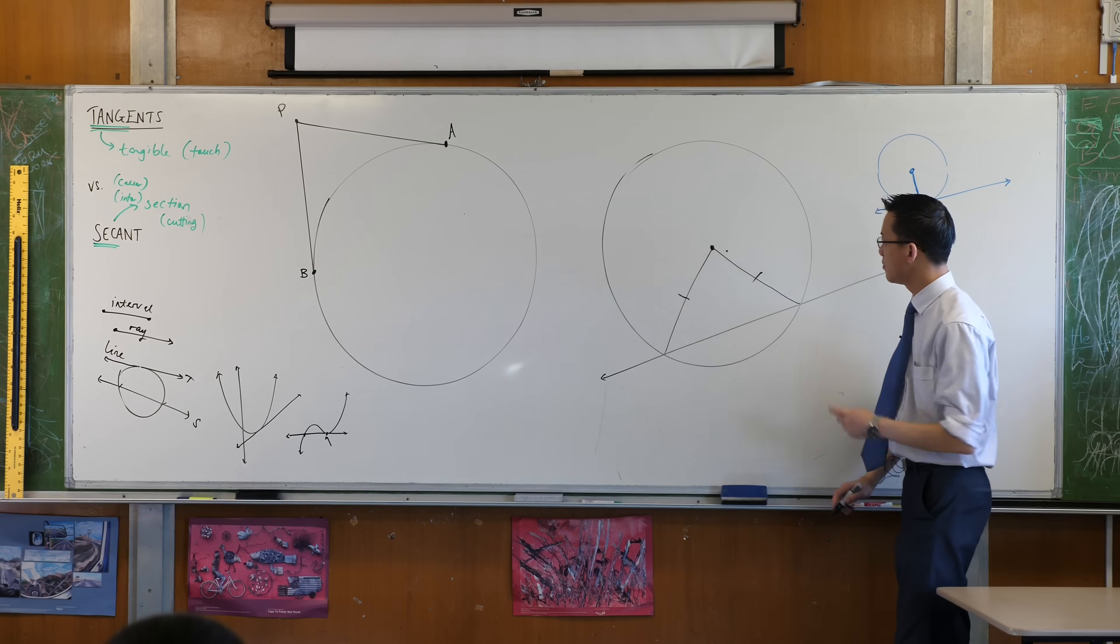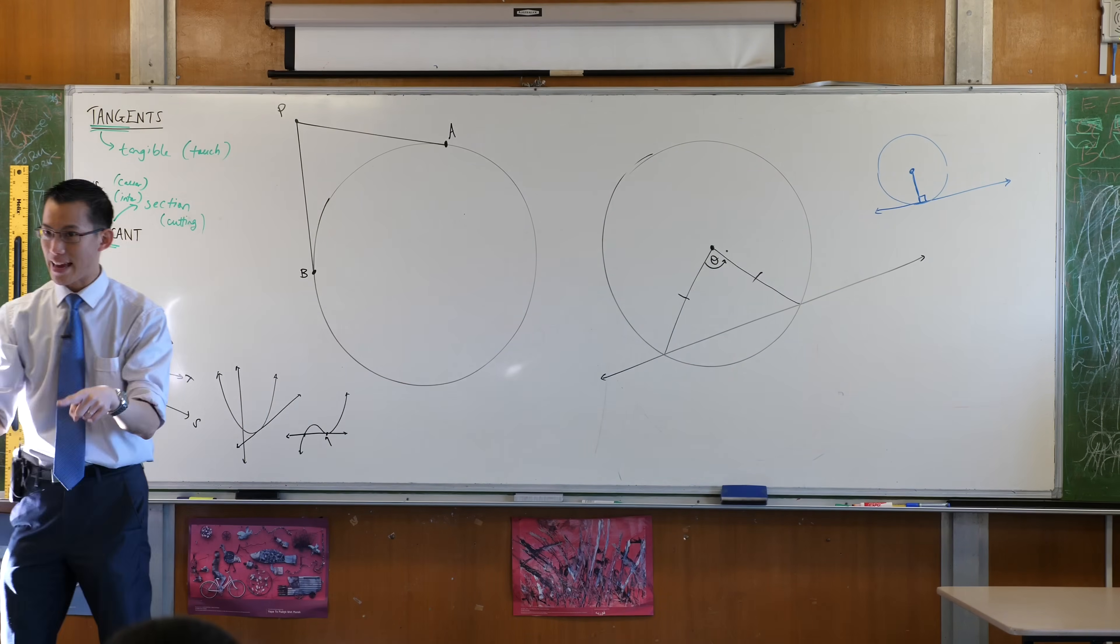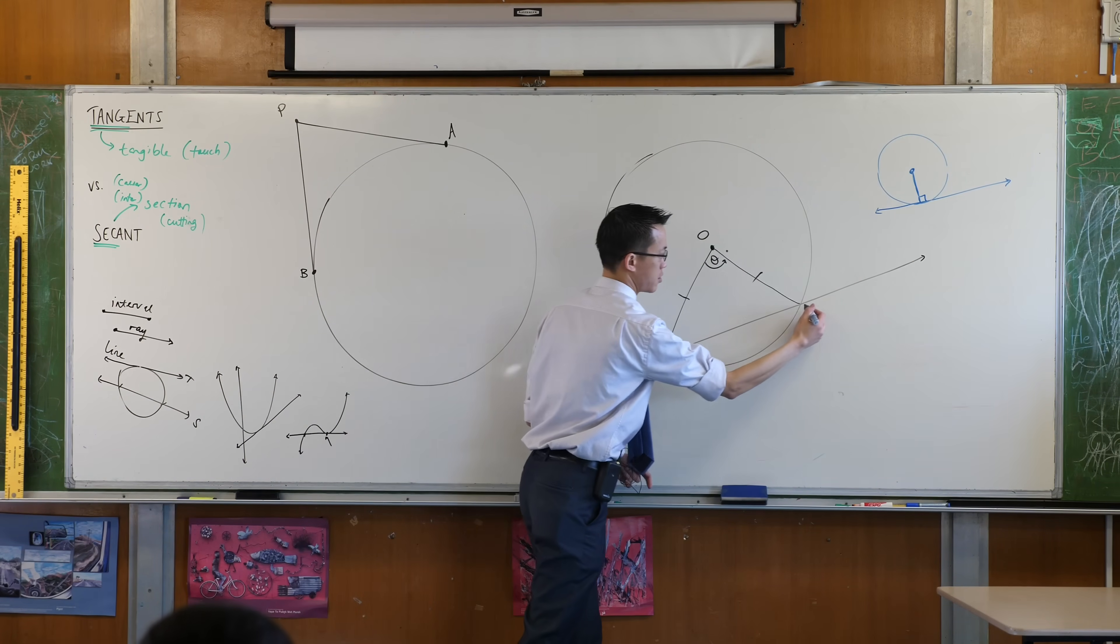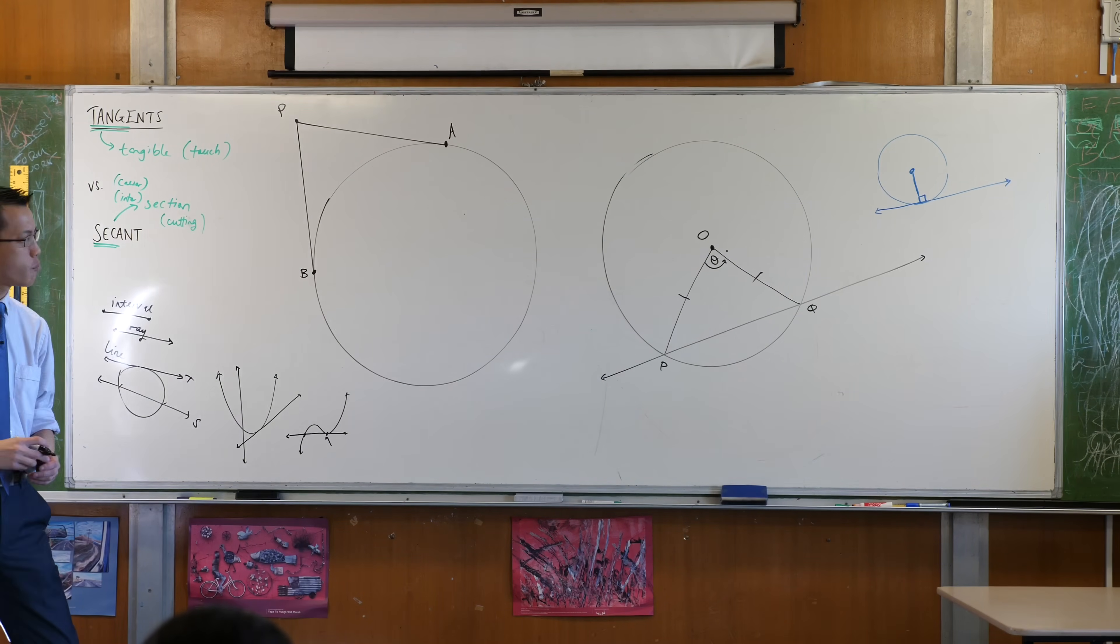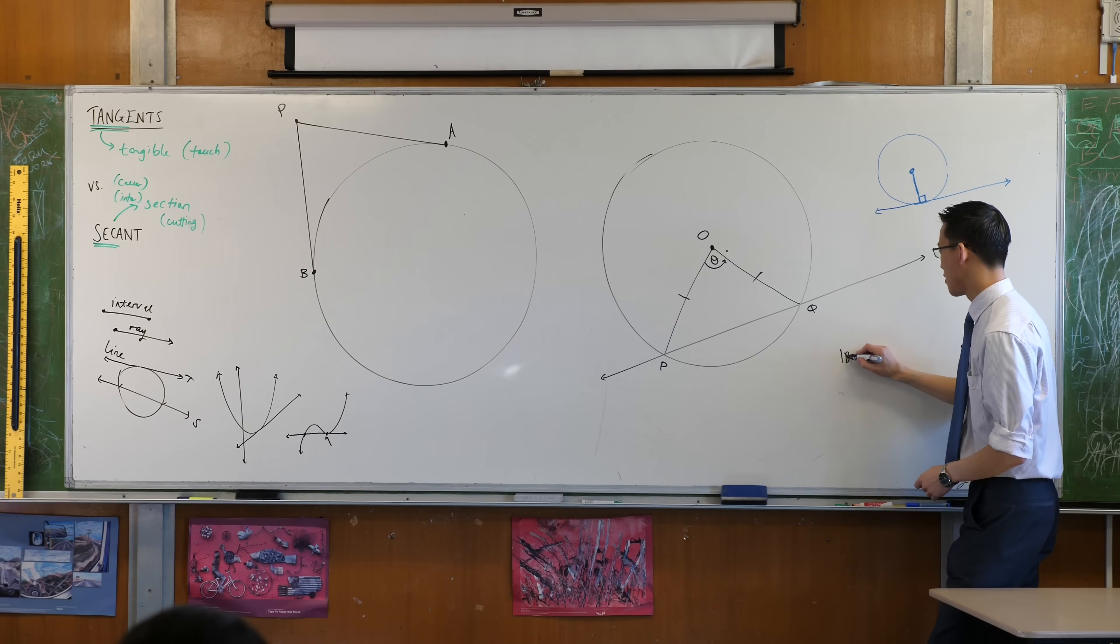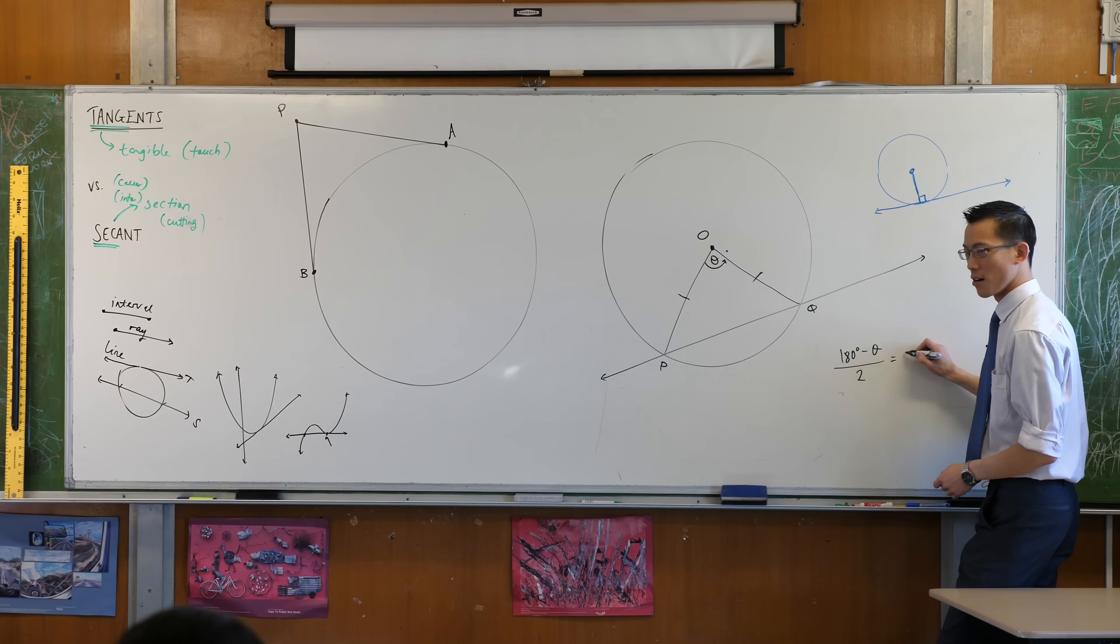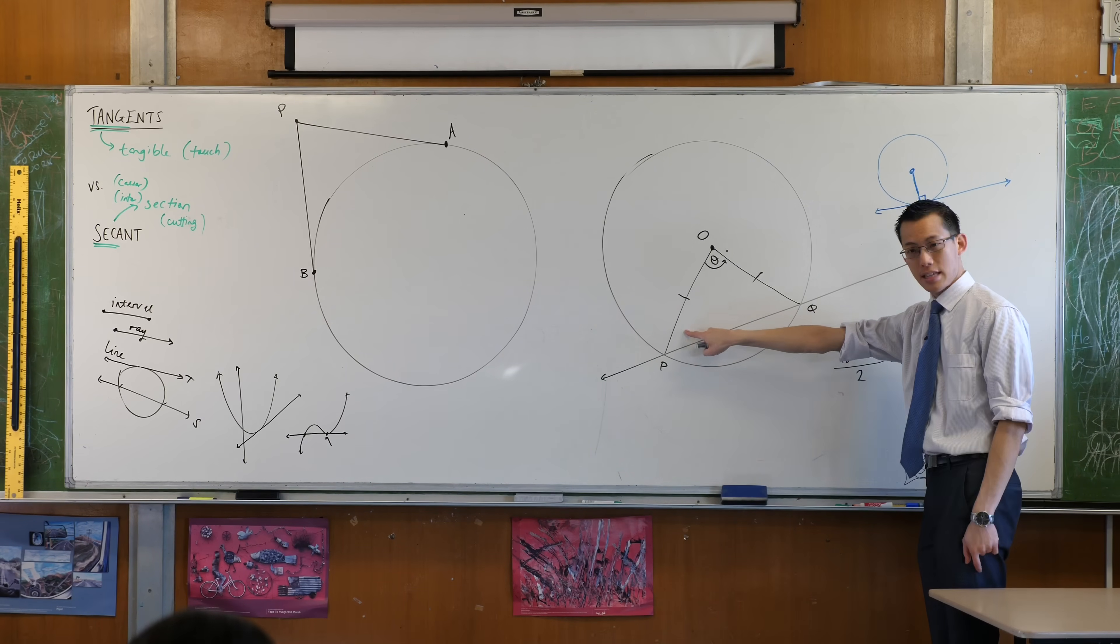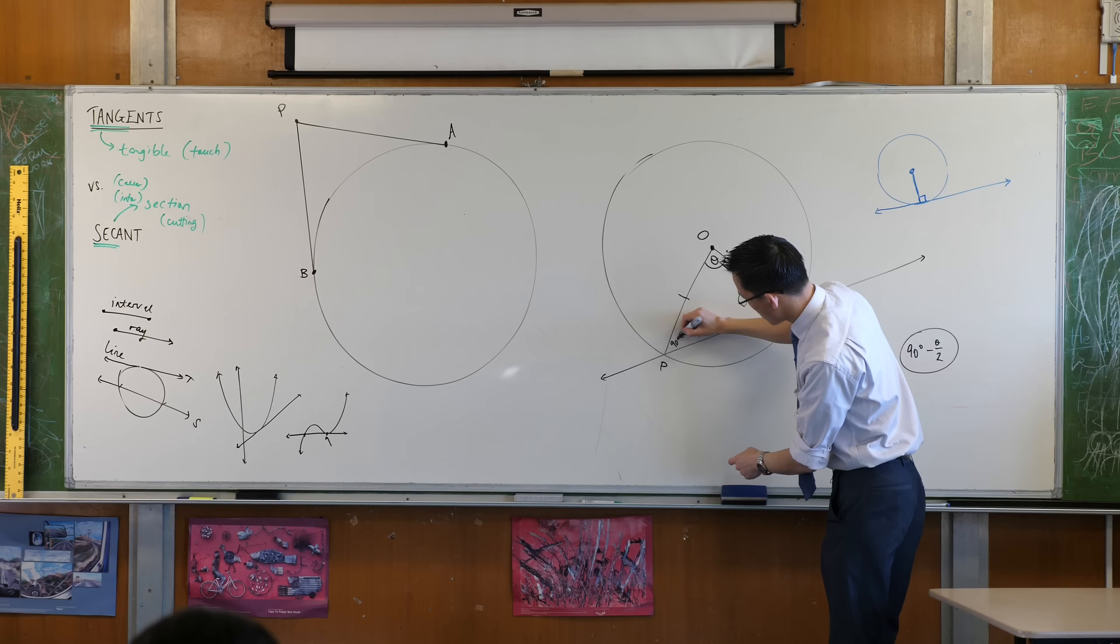So therefore it stands to reason that if I call this angle up here theta, right, I should be able to find the other two angles, the base angles, in terms of theta. What would I have them be? Let's call this OPQ. How would I find the size of angle OPQ? How would I do it? Any suggestions? Yep. I'm going to write it over here. 180 minus theta divided by 2. So that's 90 take away theta on 2. Does that check out? If this is 90 minus theta on 2, then this should also be 90 minus theta on 2. Yes? 90 minus theta on 2.